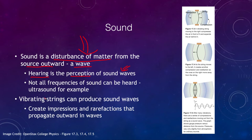Note that all frequencies of sound cannot necessarily be heard. There are sounds that are much too high or too low for humans to detect. For example, a dog whistle produces vibrations that we don't hear, but a dog's ears are sensitive to them. So different animals have different sensitivities to different frequencies of sound.